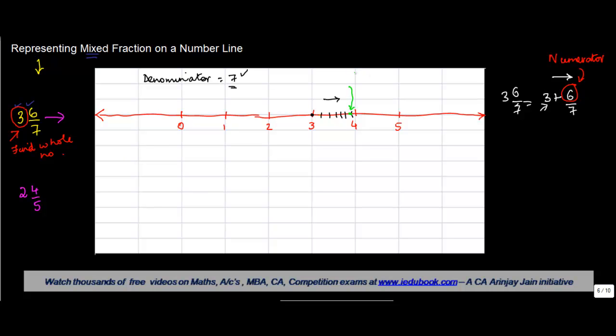This point will represent 3 6/7. Why? Because this number is more than 3, is less than 4, and when the area between 3 and 4 was divided into 7 equal parts, this was the part which was representing the sixth part.